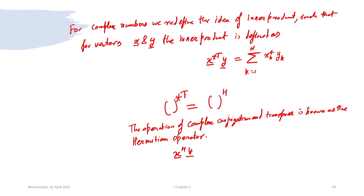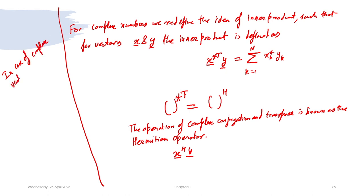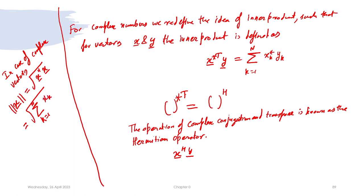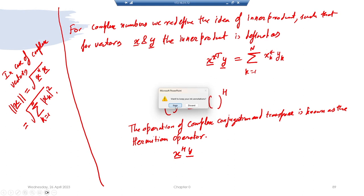The inner product is represented as x Hermitian times y, written x^H * y. In this case the norm of a vector is given by the square root of x Hermitian times x, which equals the square root of the summation from k equals 1 to n of the mod square of x_k. This is how you define inner products for complex numbers and complex vectors.